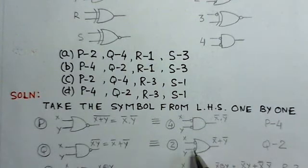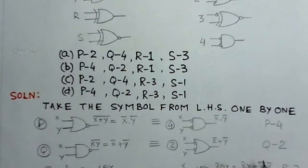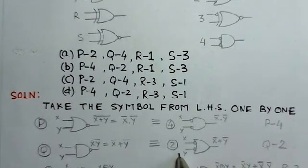You can observe that gate number 2 will give me, if X is applied at the input Y, this would be X complement, Y complement. So it will give me X OR Y bar. So this is number 2.